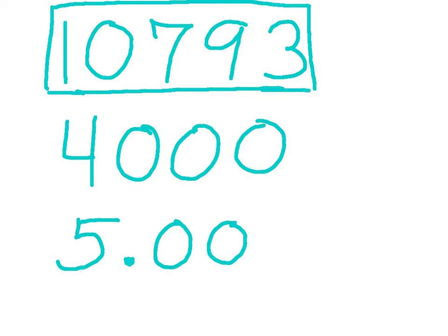In the next example, 4,000, you draw a box around the non-zero digits. There's only one non-zero digit, the 4. So in this case, the zeros are not significant, and the answer is there is one significant digit.